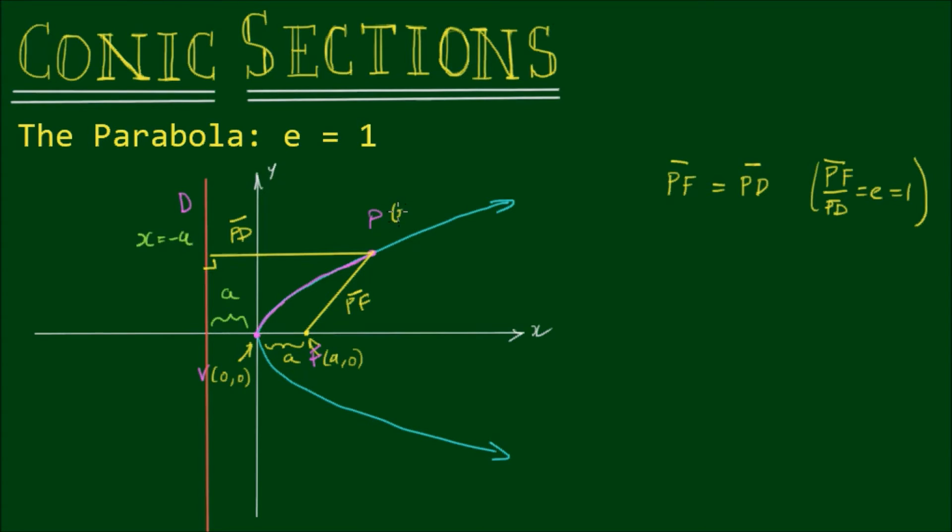So the moving point P has variable coordinates (x,y). So the distance PF is given by the distance formula, which is the square root of (x - a)² + (y - 0)². So simply the difference between the x-coordinate of P and the focus, and the y-coordinate of P and the y-coordinate of the focus. The distance PD we can denote as the magnitude, or the absolute value, of x minus negative a. Now negative a is the x-coordinate of the directrix. So this works out to be the absolute value of |x + a|.